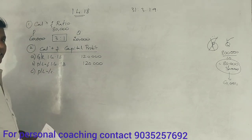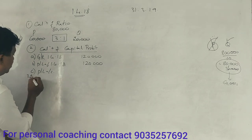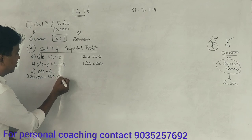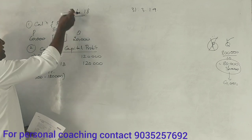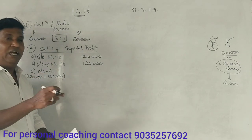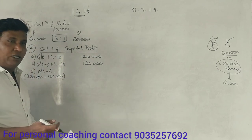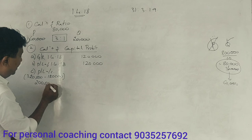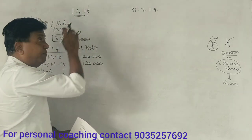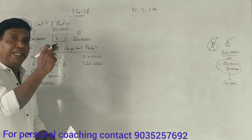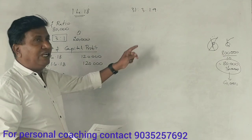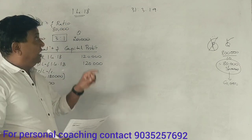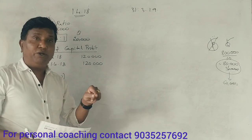It's 3,20,000 total profit. There are already 1,20,000 in the month of 2018. The price is 1,20,000. So in March 2019, we are earning profit. That means Q Limited is earning profit.